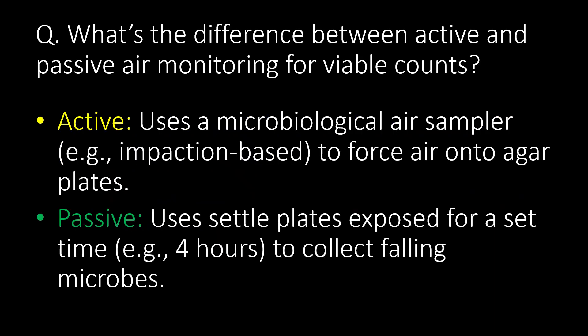What is the difference between active and passive air monitoring for Viable Counts? In the case of active sampling, we use microbiological air samplers, e.g. impaction-based, to force air onto agar plates, whereas in the case of passive air sampling, we use settle plates exposed for a set time, e.g. 4 hours, to collect falling microbes.